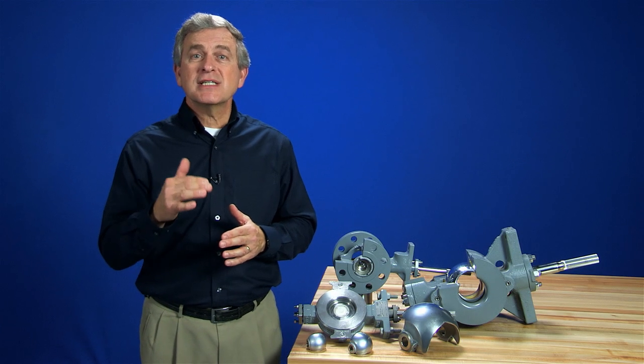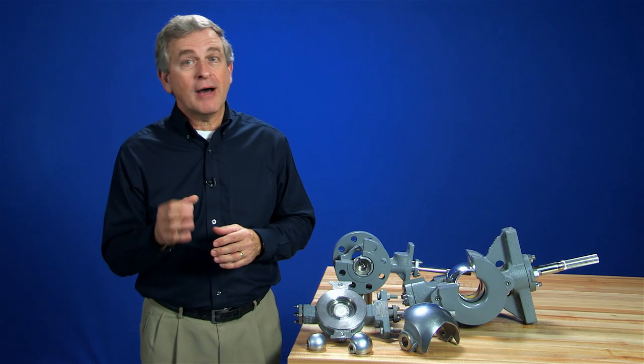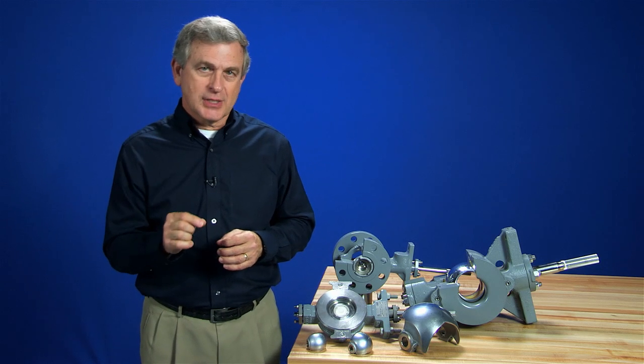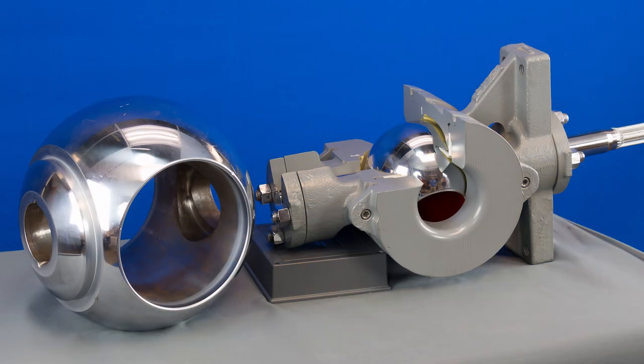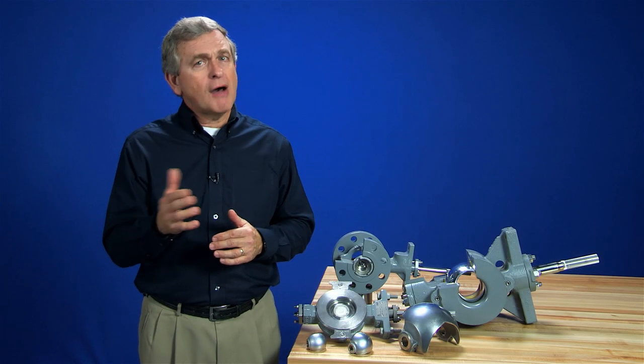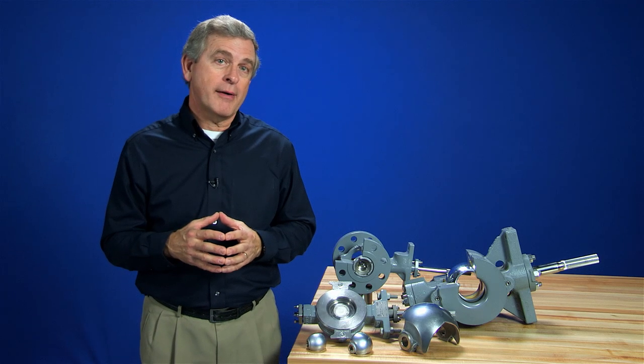Full ball valves work similar to a segmented ball valve, however instead of a V notch to control flow, a hole is bored through a fully spherical ball. These assemblies are often used when large pressure drops are required.